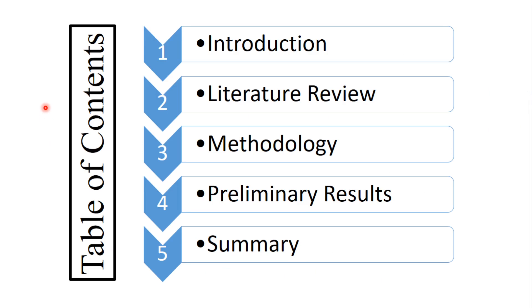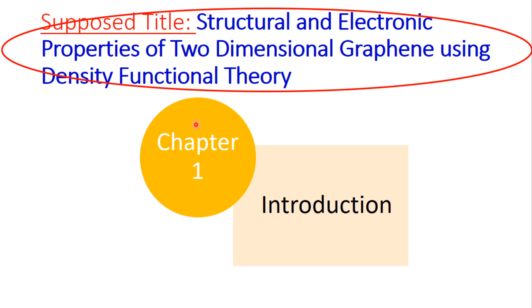Let's discuss the contents of a research proposal. A research proposal or synopsis consists of mainly five chapters, whether you are doing BS, Masters, or even PhD. The first chapter is introduction, then we have literature review, methodology, preliminary results, and the last chapter is summary. Let's discuss the contents of each chapter and how to write them effectively and quickly.